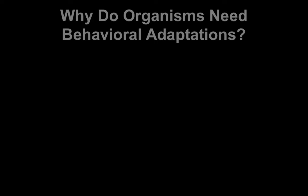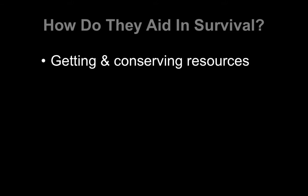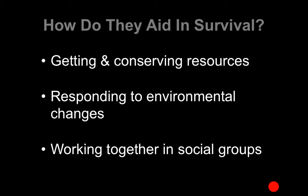So why do organisms need these adaptations? Well, for a couple of different reasons. Primarily because all living things are in competition with one another for things like survival and reproduction — the two main things that you need to do as a living thing. So let's look at how these behaviors aid survival: ones that help you get and conserve resources, ones that help you respond to environmental changes, and ones that help you work together in social groups. All of these things help improve the likelihood of survival for an individual.